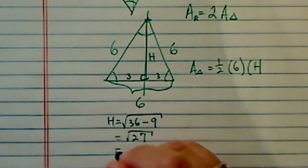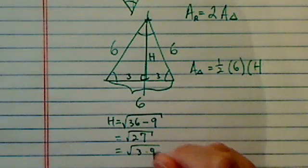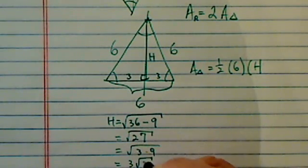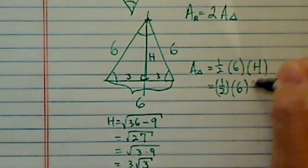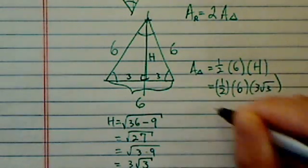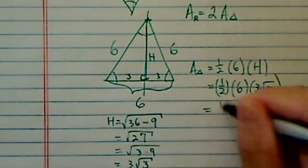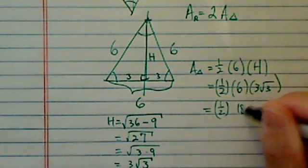Let's simplify a little bit. Three times nine, so this becomes three radical three. Area is equal to half times six times three radical three, and then we have half of eighteen radical three.